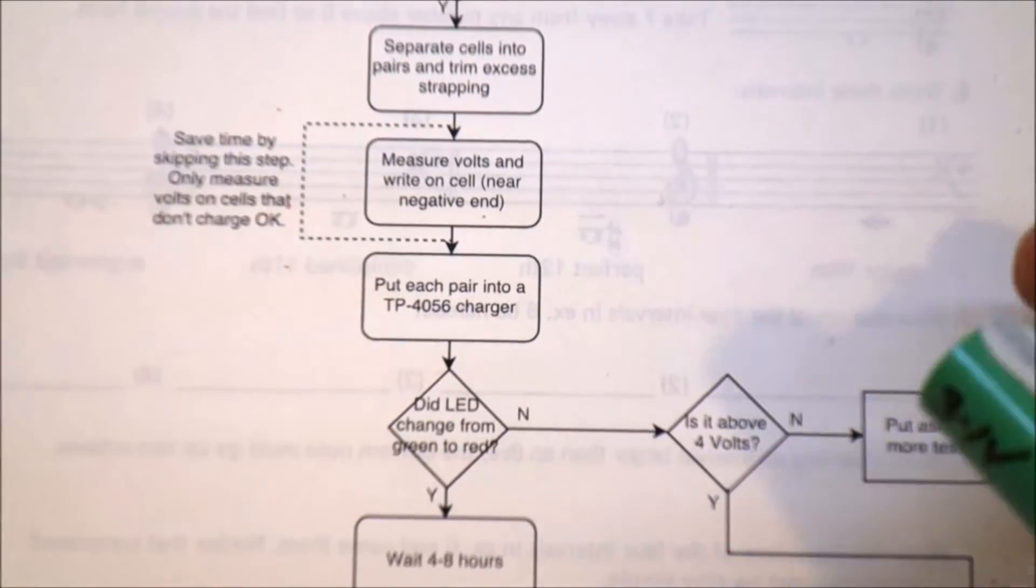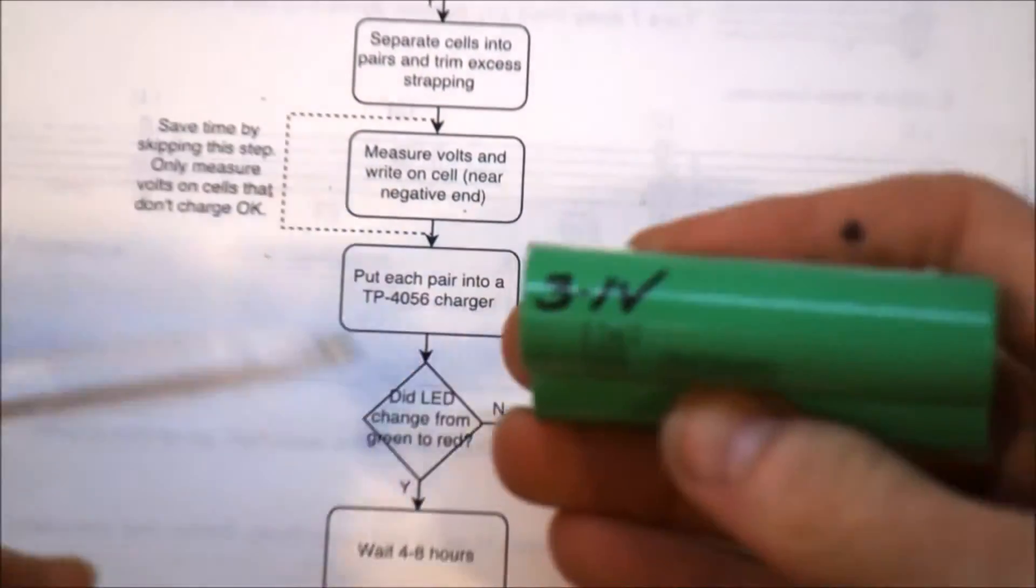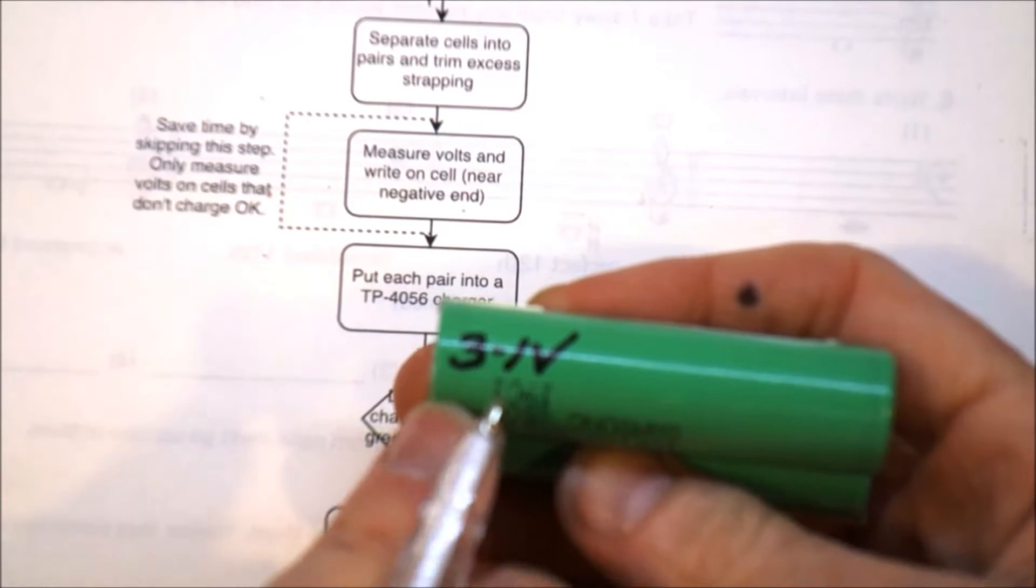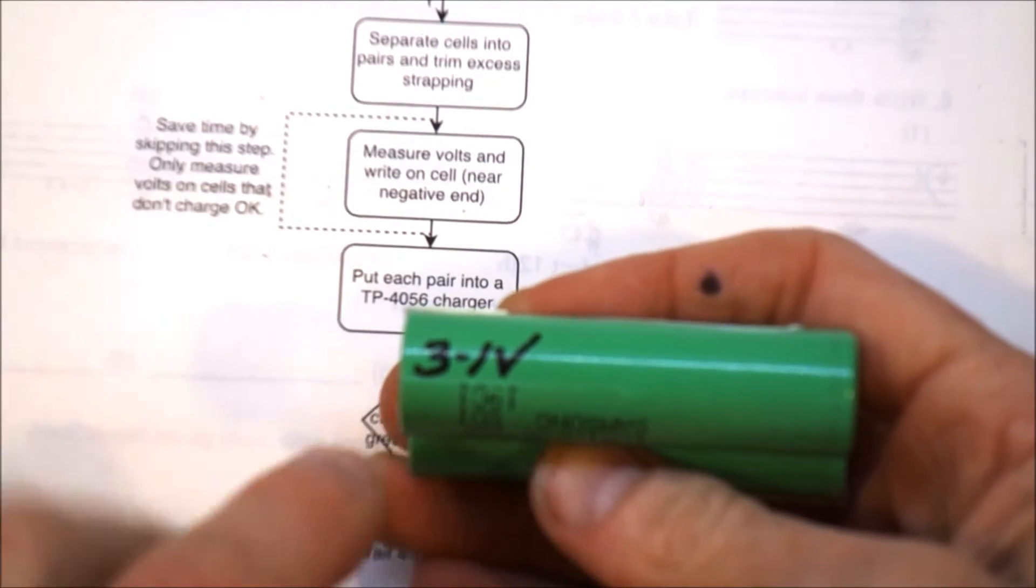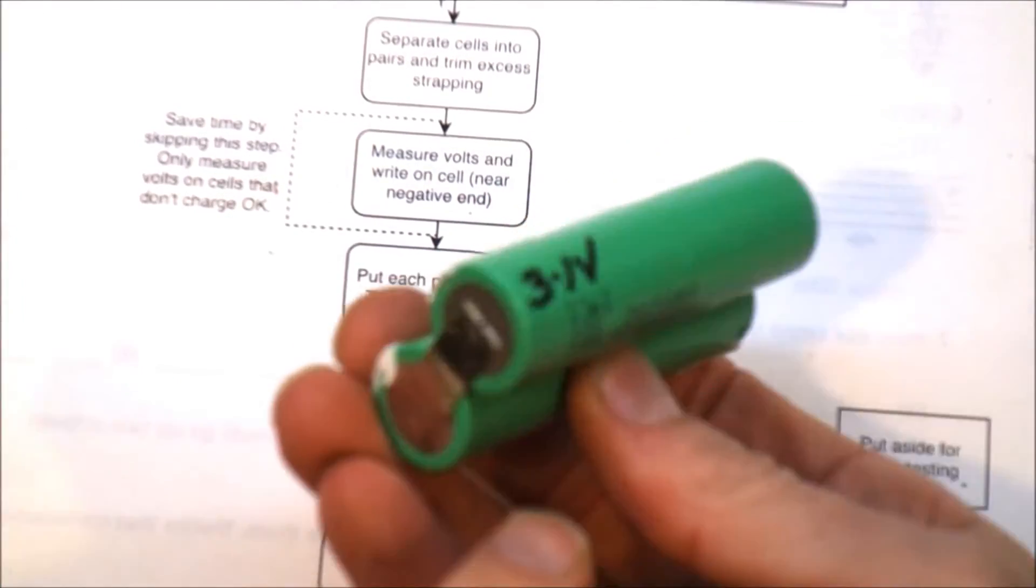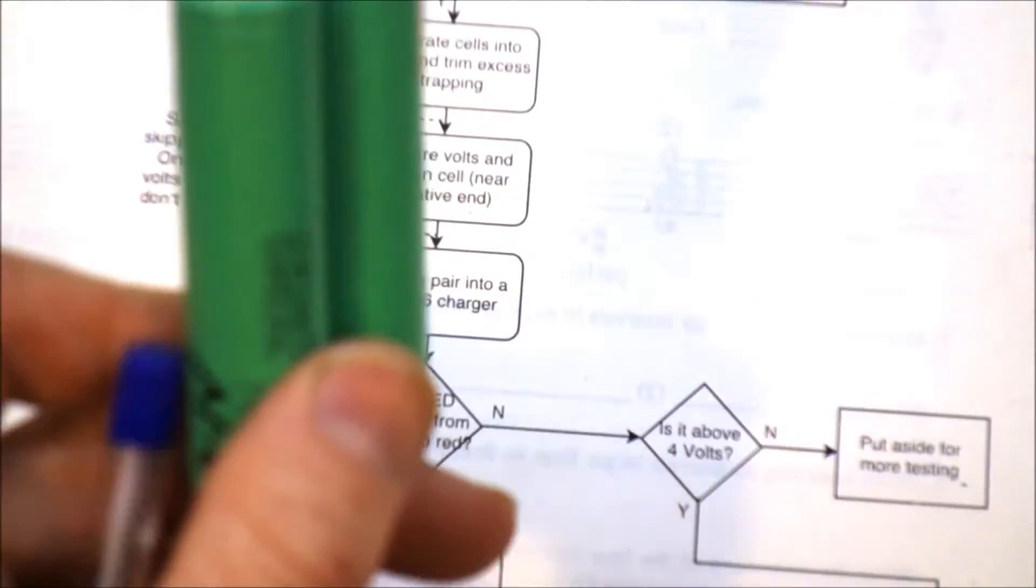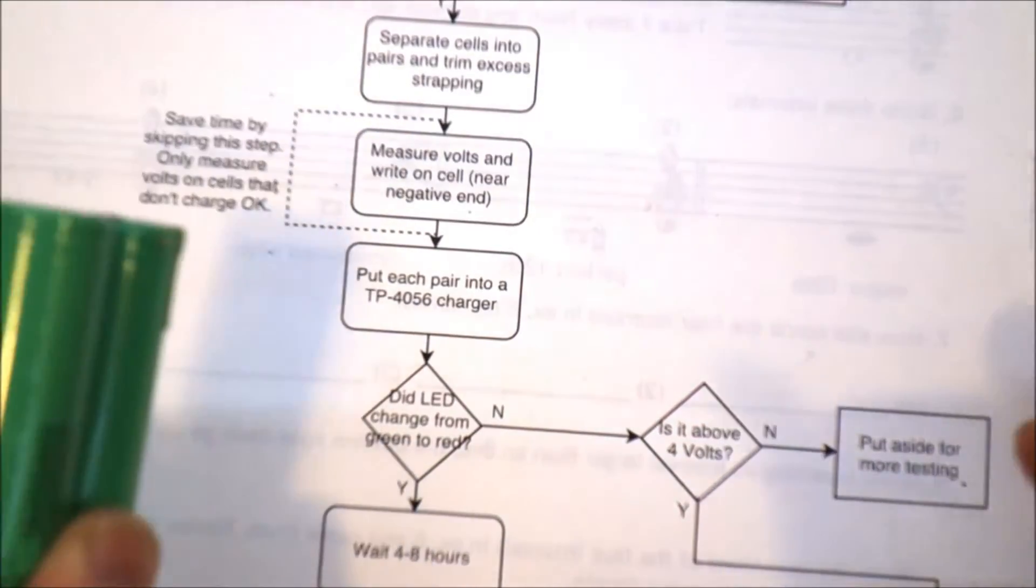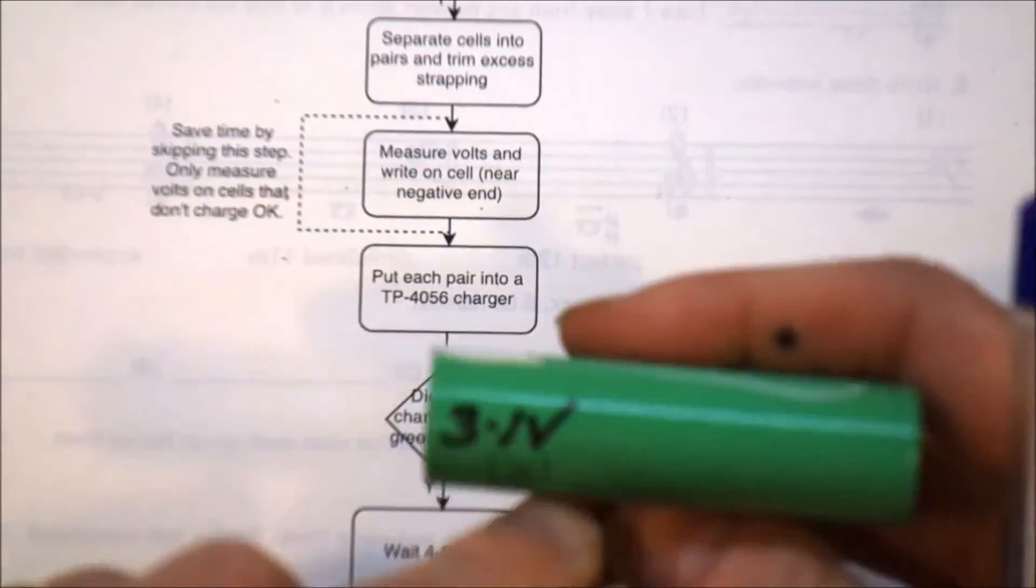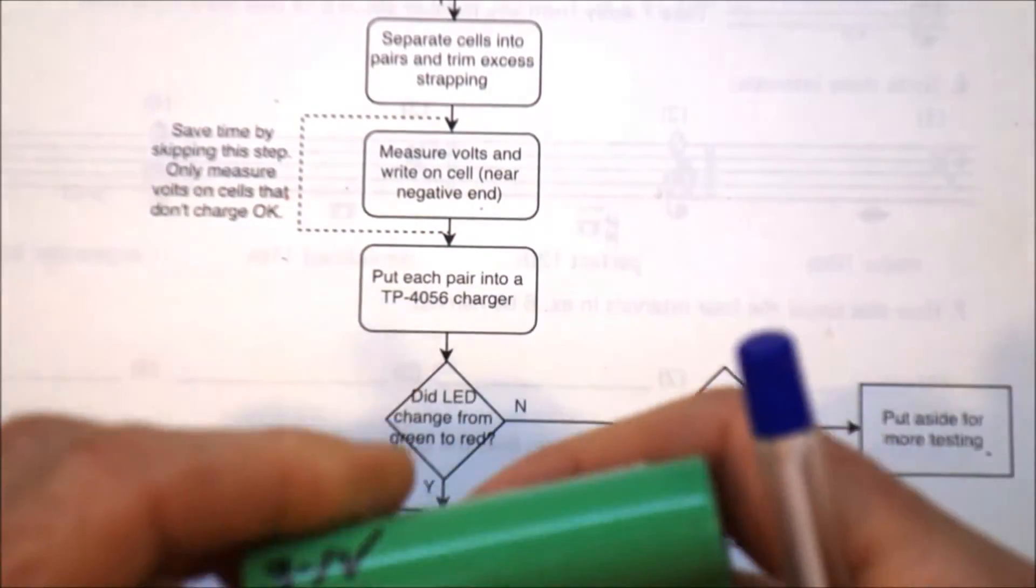Then the next thing I do is measure the voltage and write it on the negative end. Now for me, it's really important to always write it in the same place. If I write it at the negative end, then I don't have to think when I'm plugging it into the charger. And that's a system that seems to work for me quite nicely.